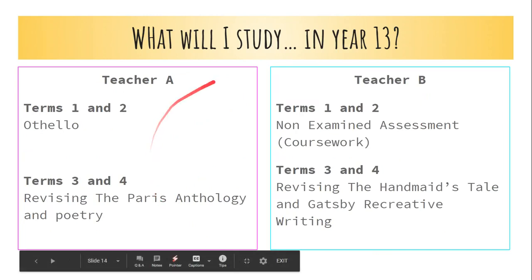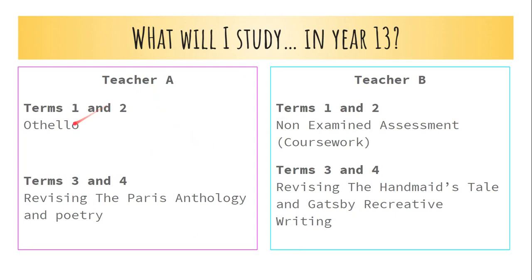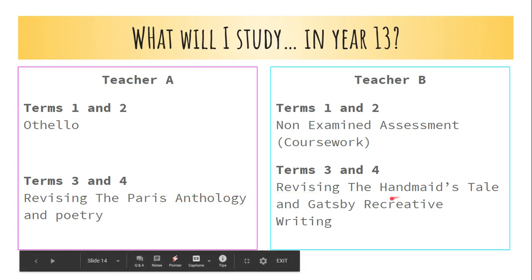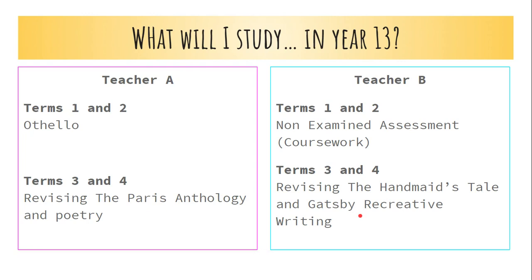In Year 13, with Teacher A you'll study Othello. The study is really similar to your study of Macbeth in Year 11, just with extra layers of complexity in terms of language — you study context, meanings, characters and so on. With Teacher B you'll be doing your non-examined assessment, your NEA: a fantastic piece of coursework where you choose two texts on anything you're interested in and do a comparison of them, allowing a lot of independence. Then Terms 3, 4 and the remainder of Term 5 are dedicated to revisiting the key texts from Year 12 for revision before your exams.